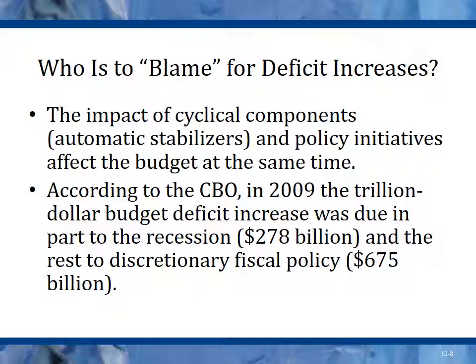Who is to blame for deficit increases? The impact of cyclical components, automatic stabilizers, and policy initiatives affect the budget at the same time. The CBO, the Congressional Budget Office, is a nonpartisan group of accountants that work for Congress without affiliation to one party or another. In 2009, the trillion-dollar budget deficit increase was due in part to the recession. The previous deficit was about three to four hundred billion. By adding a trillion dollars to the deficit in one year in 2009, we tripled what was previously the largest deficit in our history.